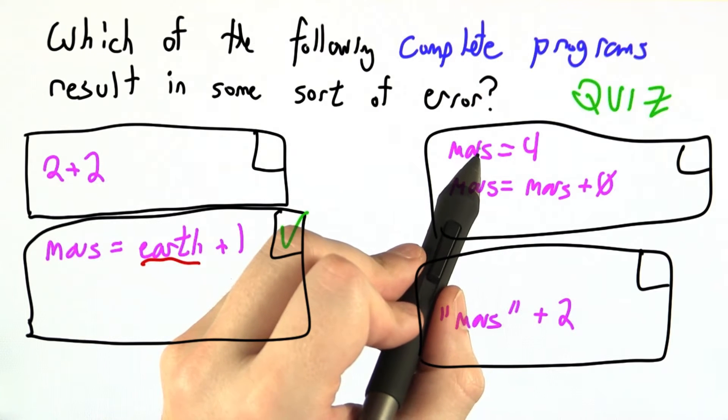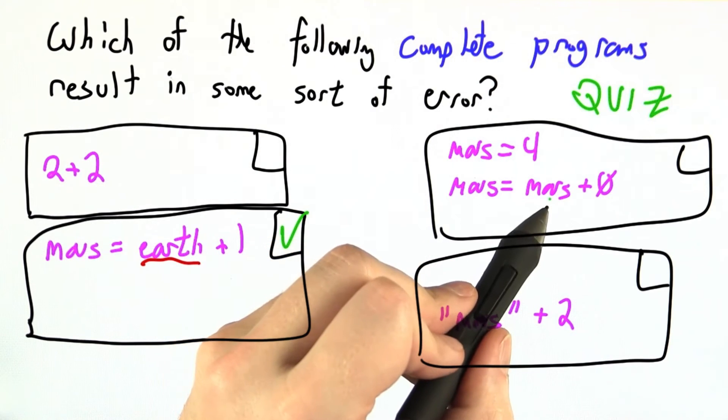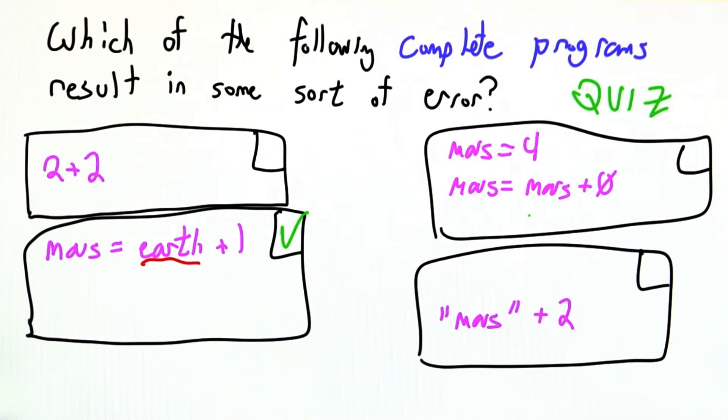Over here we assign Mars to be 4, that's totally fine, and then we assign Mars to be Mars plus 0 or another 4, so no errors here.